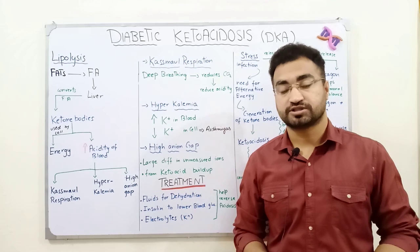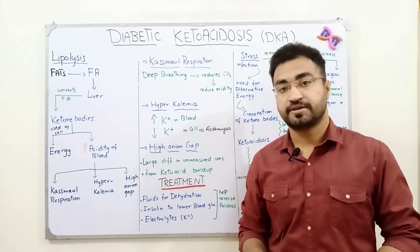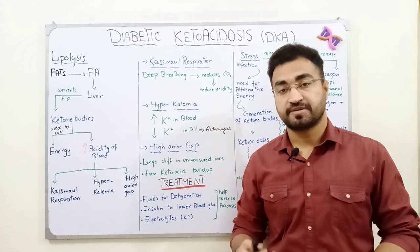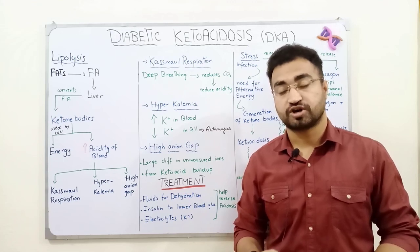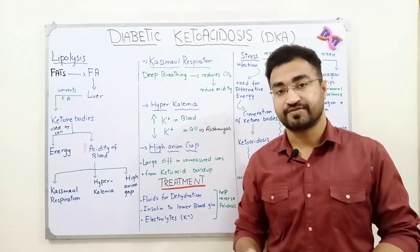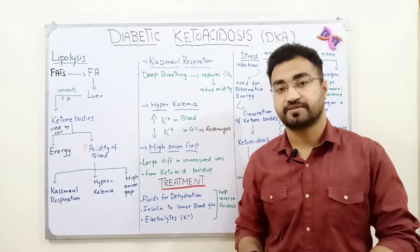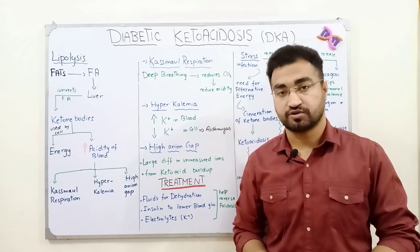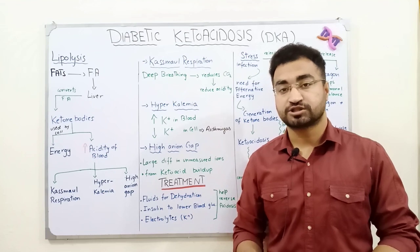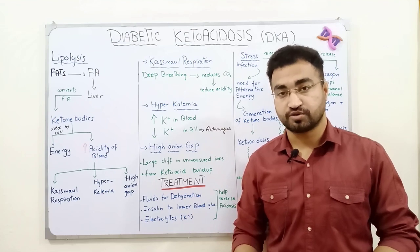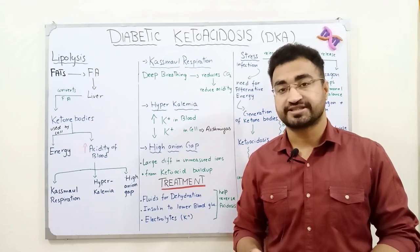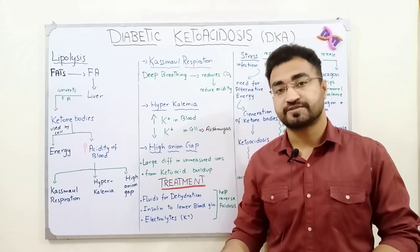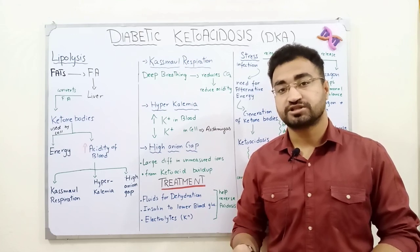To recall from our previous lecture: in type 1 diabetes, there is a genetic mutation causing the body's immune system — specifically T cells — to attack the pancreatic beta cells, which are responsible for producing insulin. Without insulin, blood glucose levels rise higher and higher because glucose cannot enter the cells.